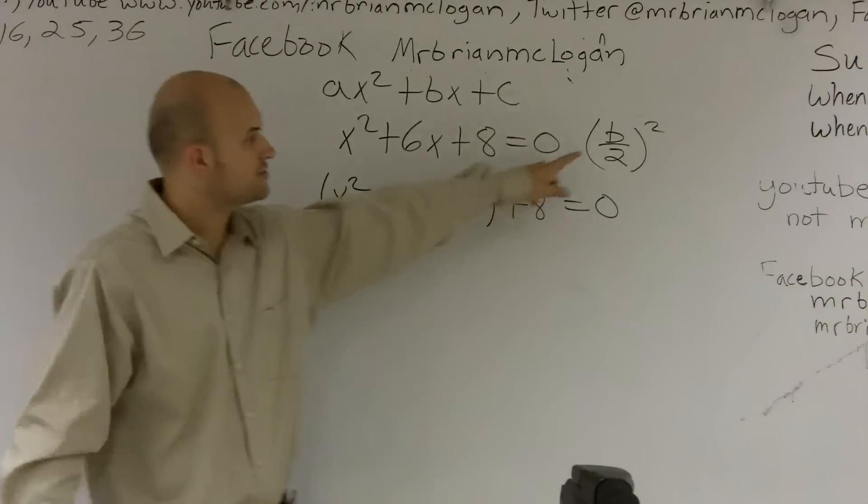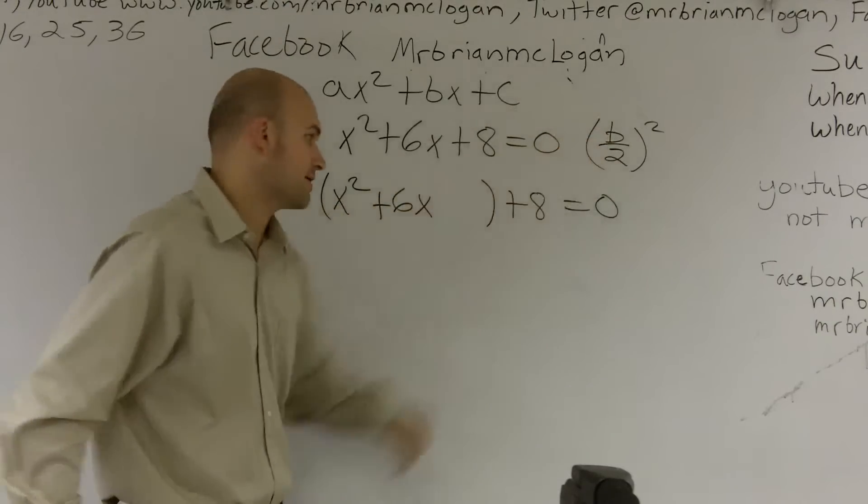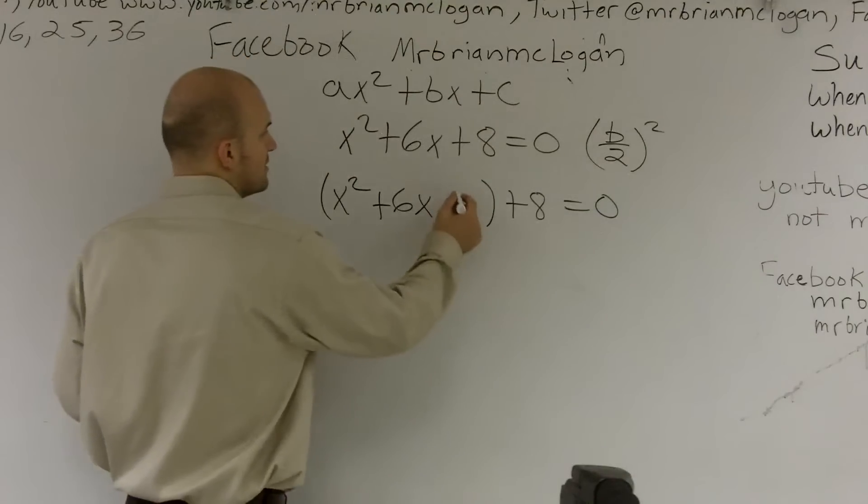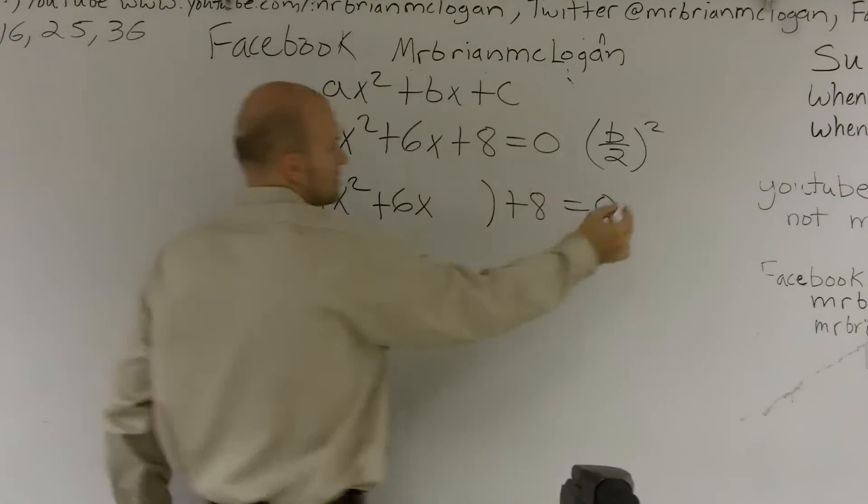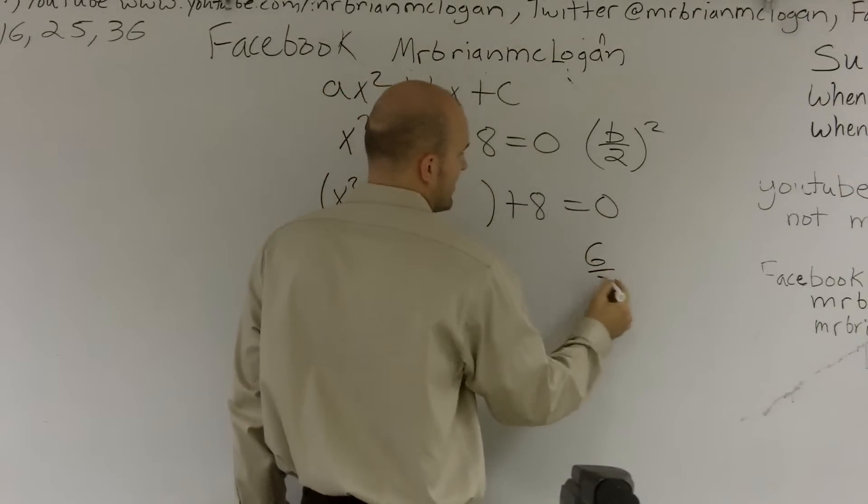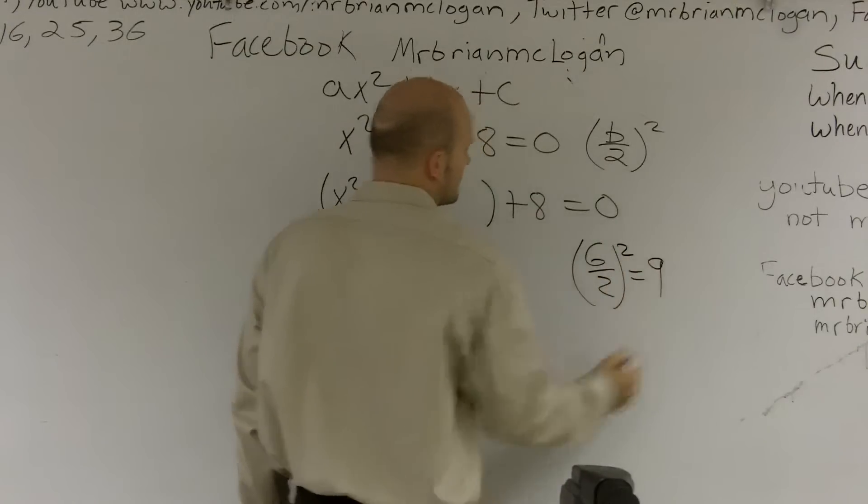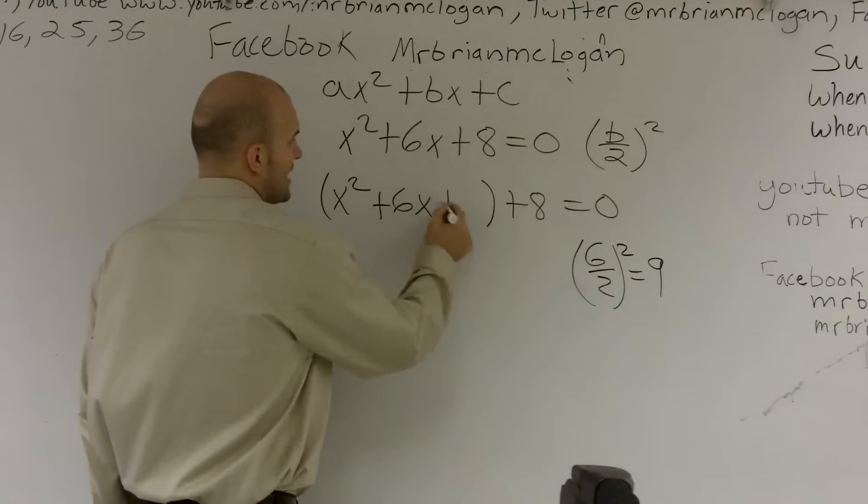Well, the way to create one is to do b over 2 squared. So b is 6. 6 over—I'll just do one for you. 6 divided by 2 squared equals 9. So I'm going to add a 9.